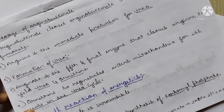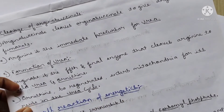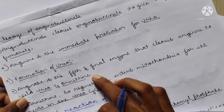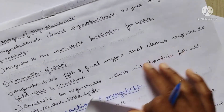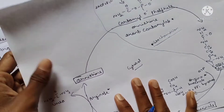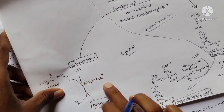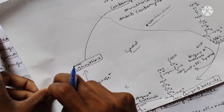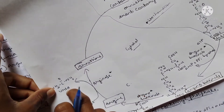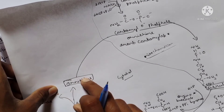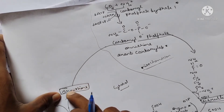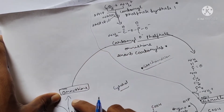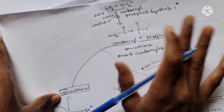The fifth and final step is the formation of urea. Arginase is the fifth and final enzyme, which cleaves arginine to yield urea and ornithine. Urea is the product excreted in the form of urine via the kidneys. Ornithine is regenerated in the mitochondrial membrane and reused in the urea cycle.